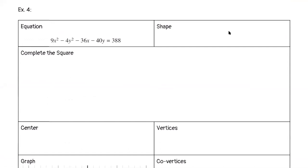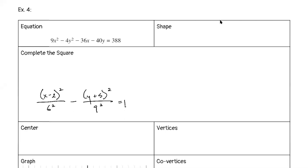We did this one together in the warm-up, so I'm just going to write down the equation we found: (x−2)²/36 − (y+5)²/81 = 1. What shape is this, and how do we know? Hyperbola, because of the minus sign. That's sufficient reasoning — you don't need to go deeper than that.